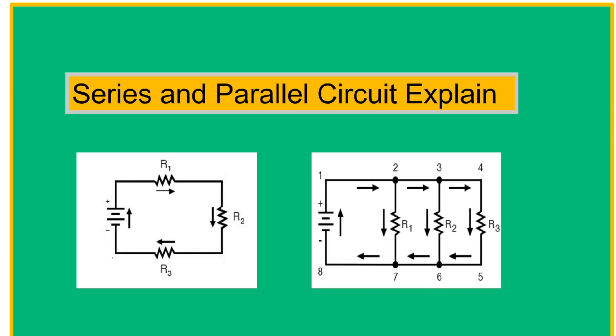A series circuit has all loads connected in one row and there is only one path for the electricity to flow. For the parallel circuit, it is a circuit that has two or more paths for electricity to flow.